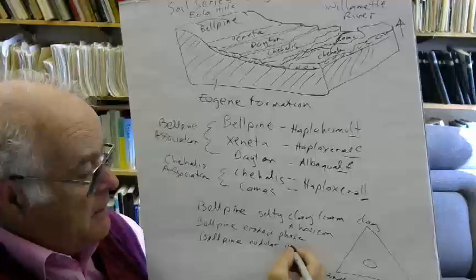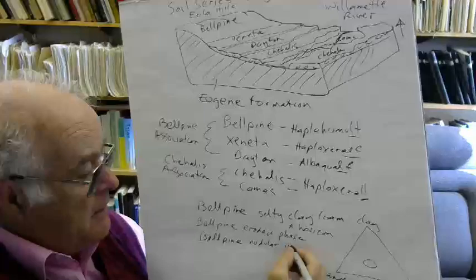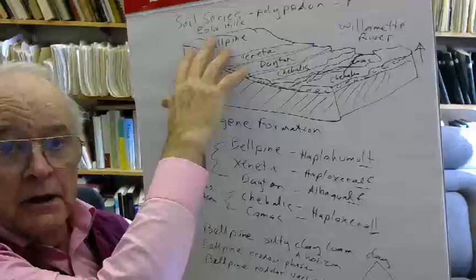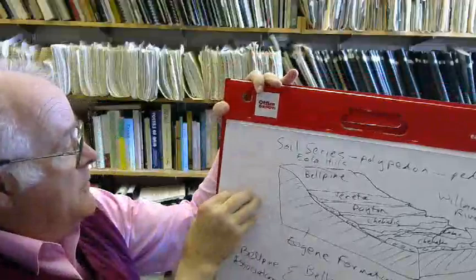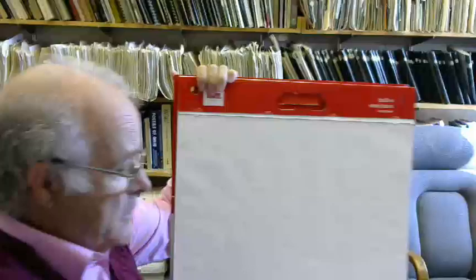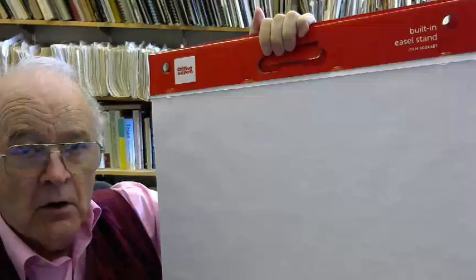You can also have the Belpine eroded phase. If you recognize that a part of the soil is eroded, an eroded phase, or the Belpine nodular variant. Sometimes these soils have ferruginous nodules in them. You can name nodules as well.